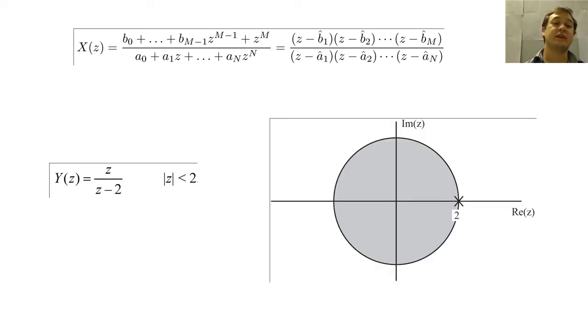In this example, we have a pole at two and a zero at zero. For this left-sided Z-transform, the pole marks the outer boundary of the region of convergence, and the zero is inside the ROC.